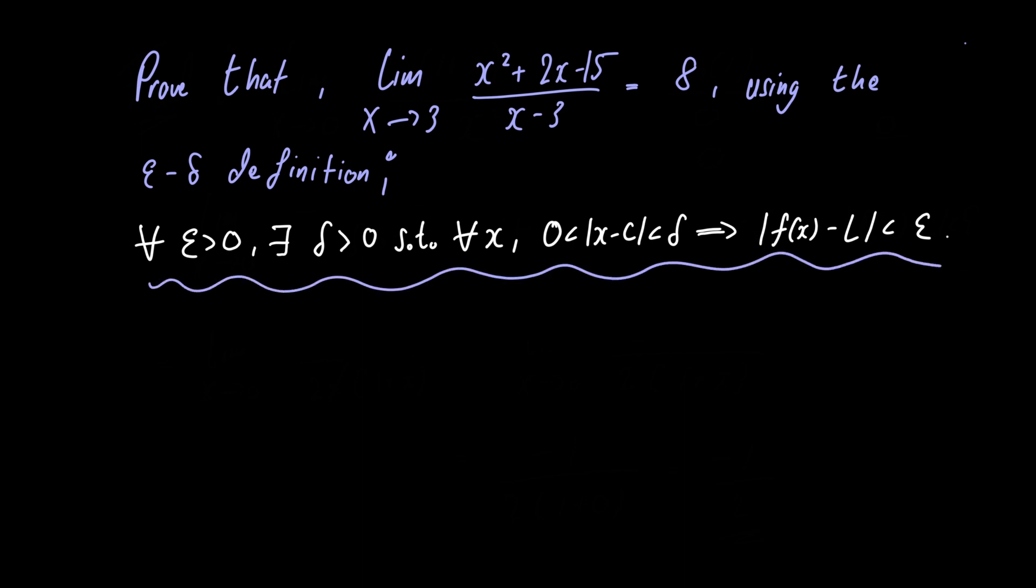So the definition says that for all epsilon greater than 0 there exists delta greater than 0 such that for all x, 0 less than the absolute value of x minus c less than delta implies the absolute value of f of x minus l is less than epsilon.